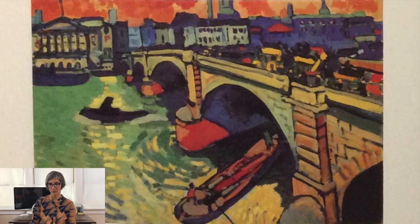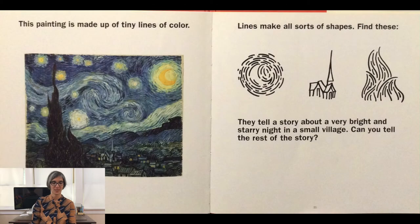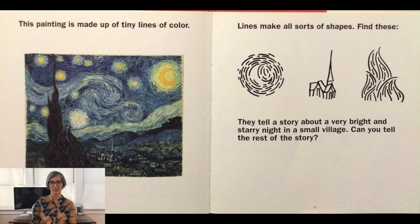How do you think you would feel walking across this bridge? This painting is made up of tiny lines of color. Lines make all sorts of shapes. Find these shapes in the painting by Vincent van Gogh called The Starry Night. They tell a story about a very bright and starry night in a small village. Can you tell the rest of the story? Go ahead and pause the video.